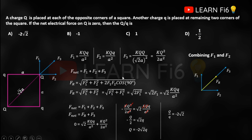One important point: when combining F1 and F2 we must use the parallelogram law because they act in different directions. After combining them into Fr, we are left with Fr and F3, which act along the same line — they are collinear vectors. When two vectors are collinear or parallel, you can add them directly without using the parallelogram law.